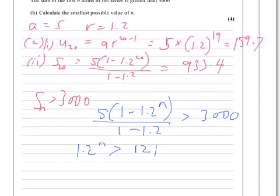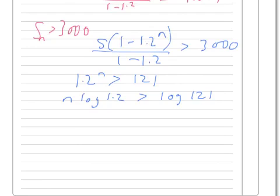and now we need to use logarithms, so n log 1.2 is greater than log 121, doesn't matter which base we're working in here, so now n has to be greater than logarithm of 121 divided by the logarithm of 1.2,